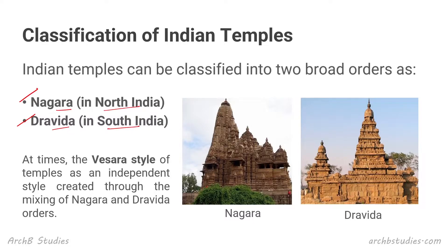You can see on the right side the images of the Nagara and Dravida styles of architecture. You will also find the Vesara style of architecture, which is a mix of both Nagara and Dravida. Vesara is independent and does not follow all the rules of any one of these styles.